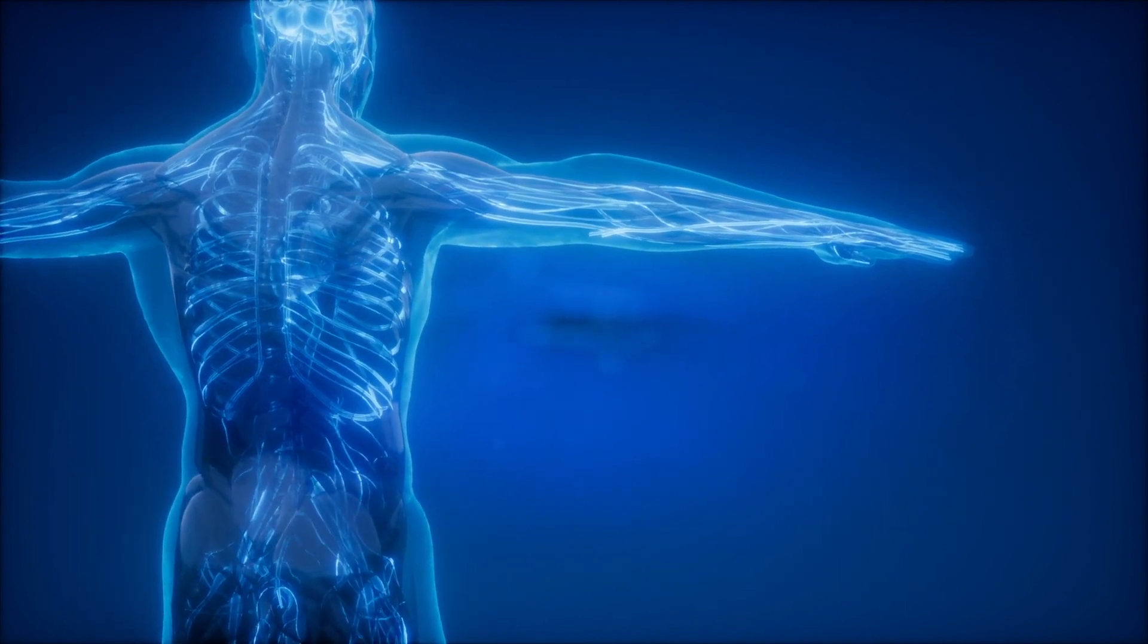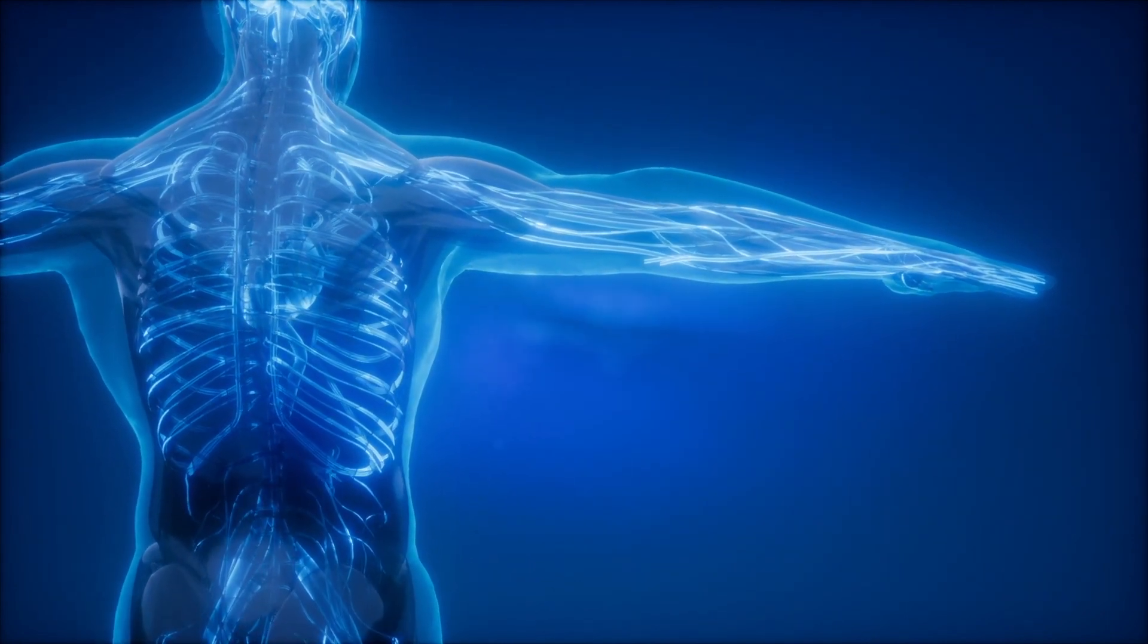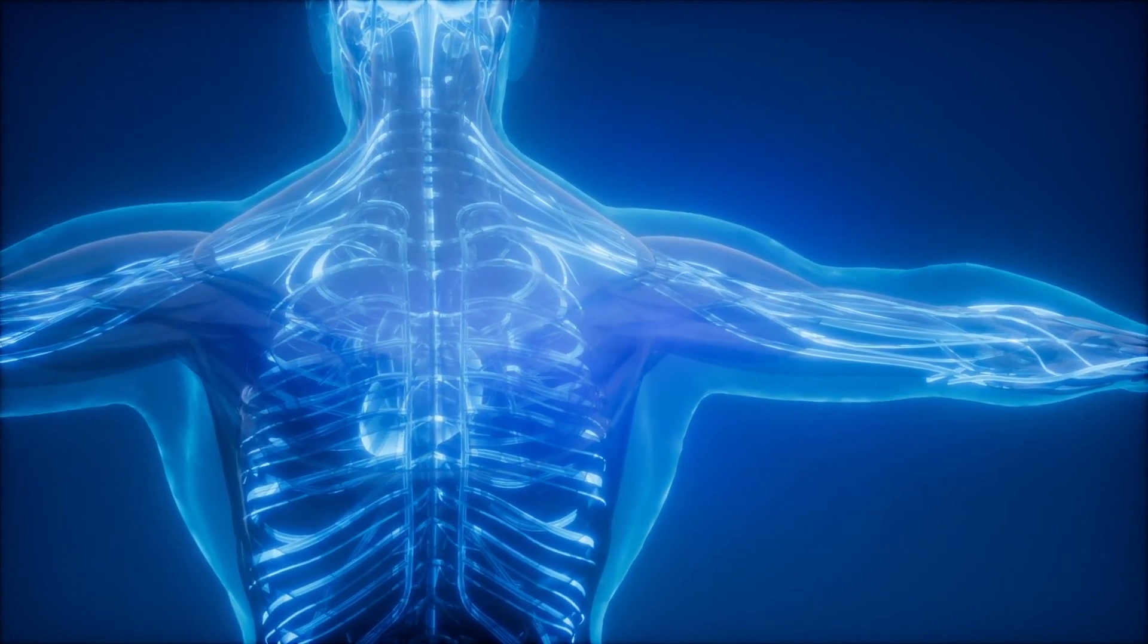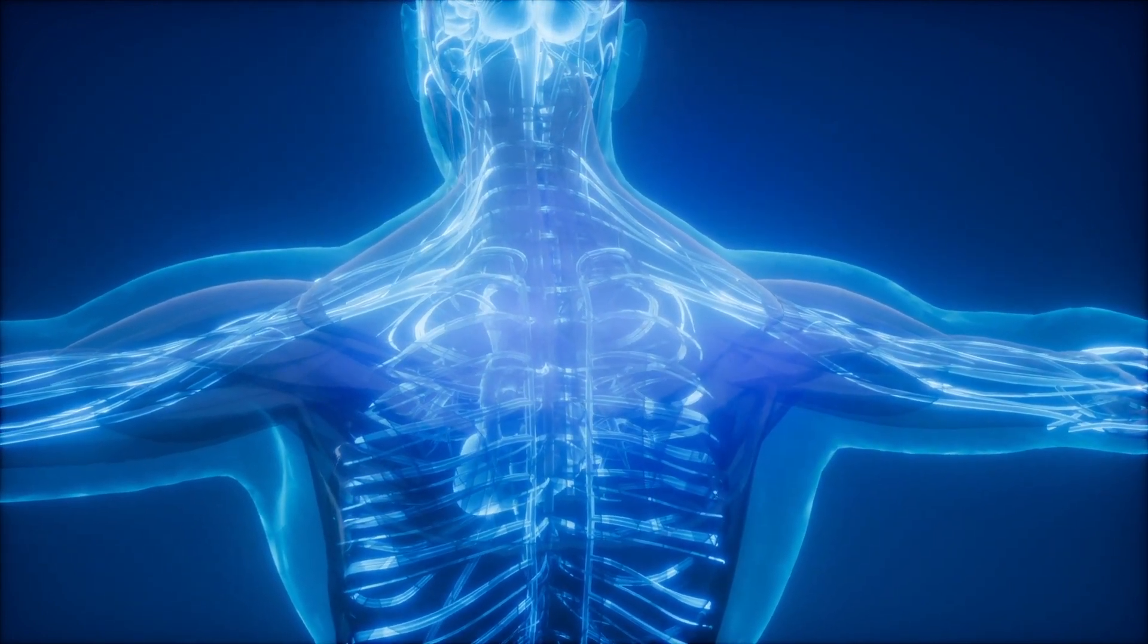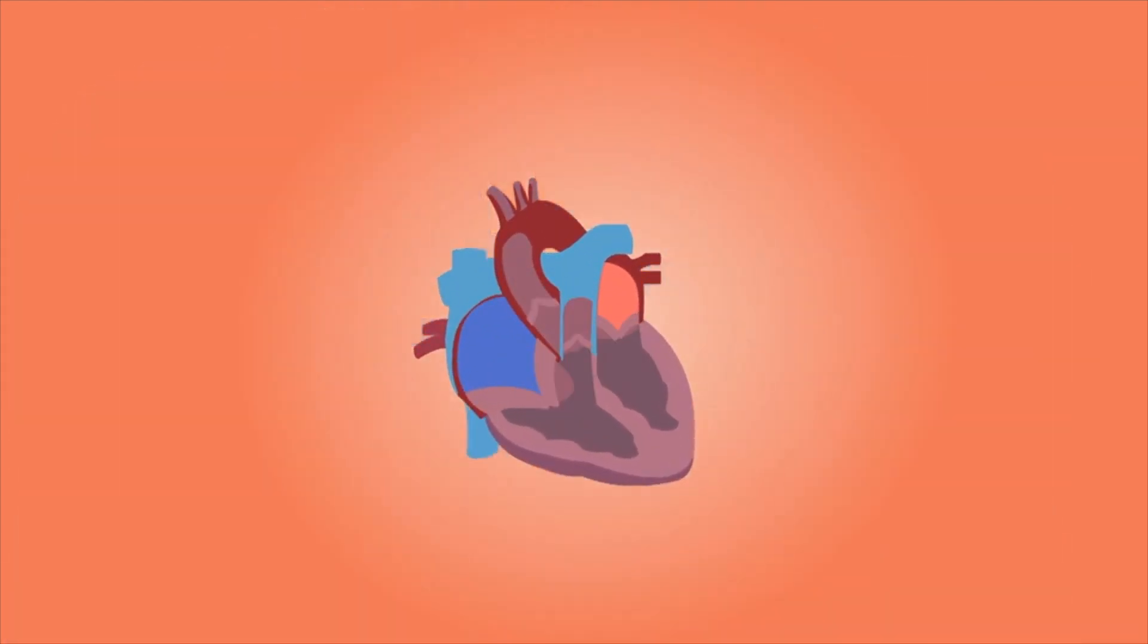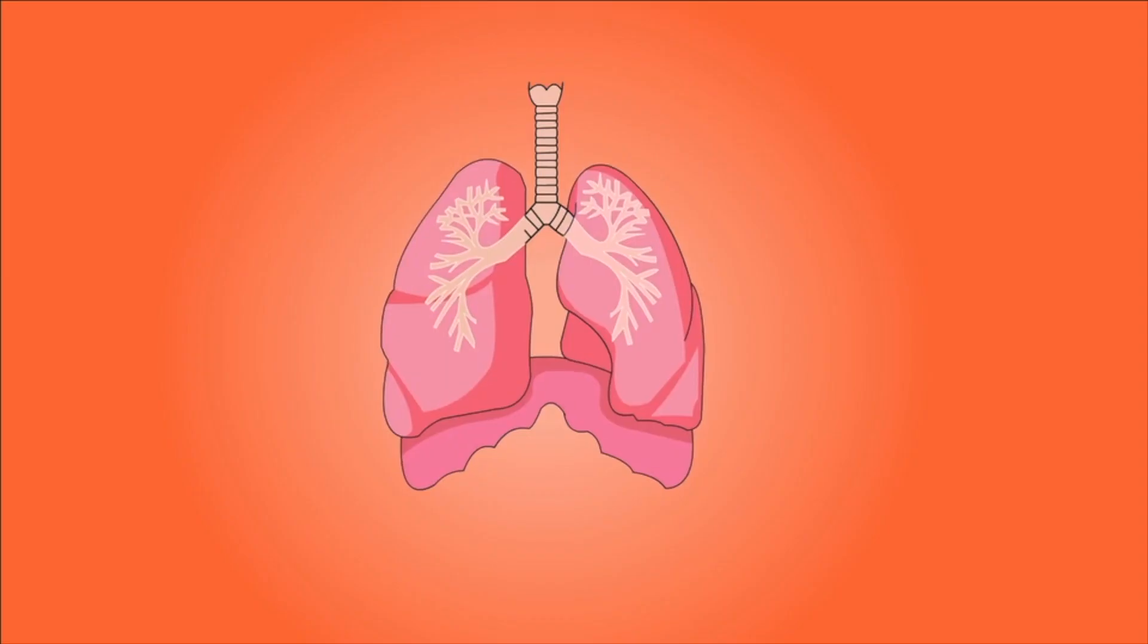Once it has delivered the nutrients and oxygen to your cells, the blood picks up carbon dioxide and returns it to the heart through veins. The heart has two different pumps. One sends oxygen-rich blood throughout the body. The other pump sends the carbon dioxide-rich blood from the veins to the lungs. The lungs breathe out the carbon dioxide and breathe in more oxygen.